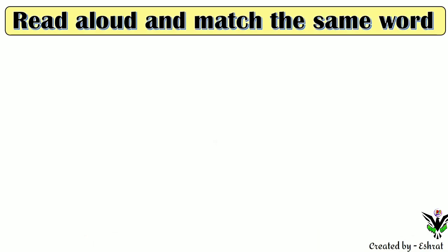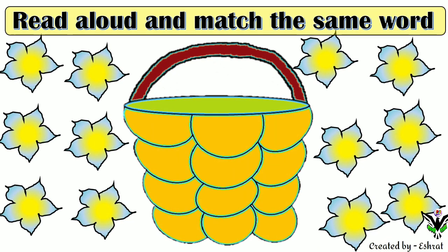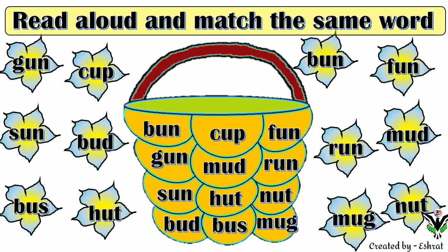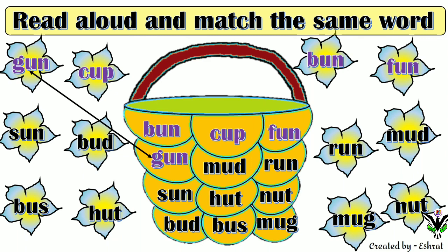Read aloud and match the same words. In this activity there are words in the flowers and in the basket. Look at the words carefully and match them. The first basket word: B-U-N, bun. Find it — B-U-N, bun. C-U-P, cup. F-U-N, fun. G-U-N, gun.